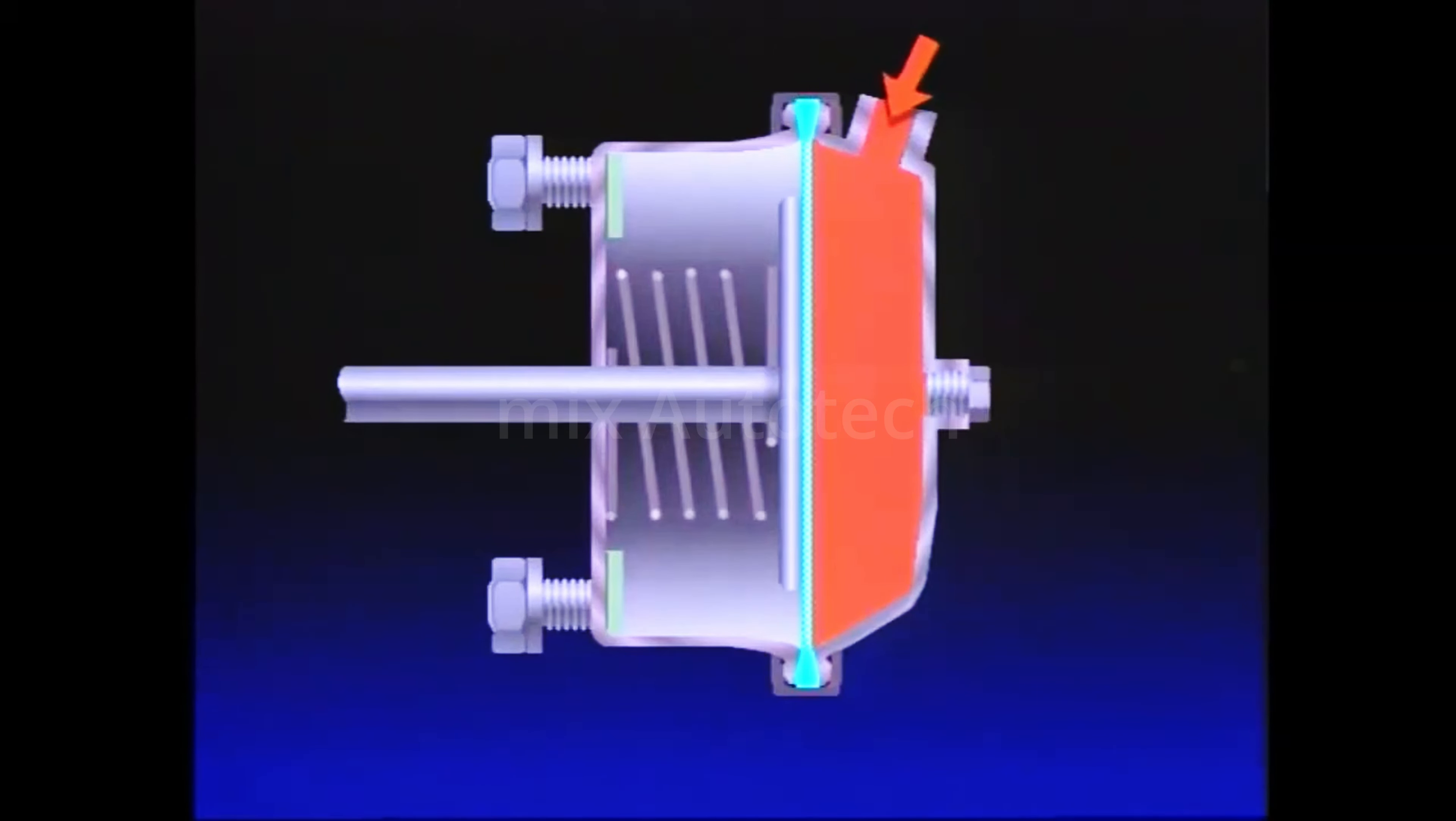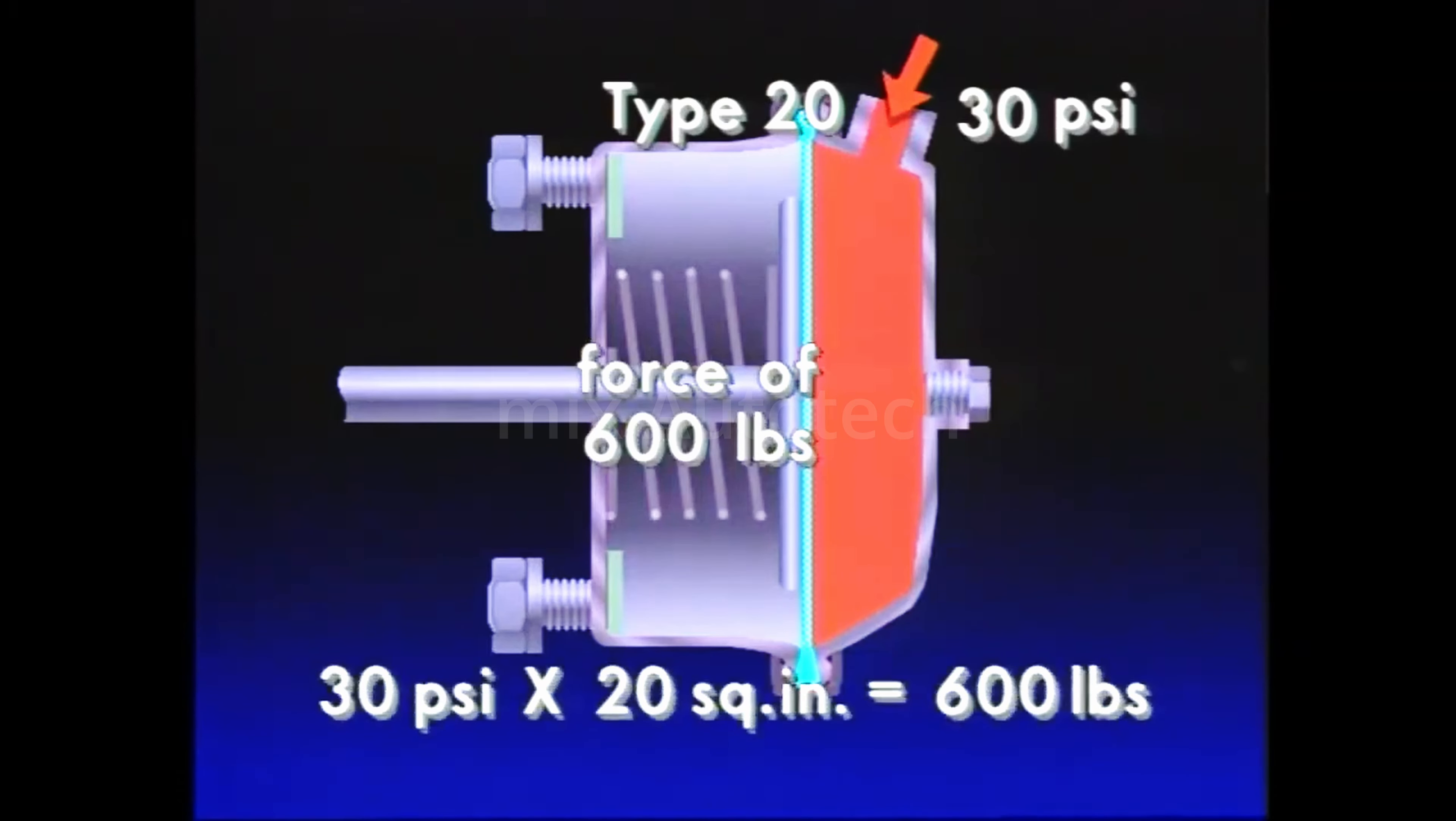The force exerted against the push rod, and therefore the power of the brake application, is dependent upon the air pressure applied to the chamber diaphragm. If, for example, the brake delivered 30 psi pressure to a type 20 chamber, the push rod would move out with a force of 600 pounds. That's 30 psi on each of the diaphragm's 20 square inches, or 20 times 30.